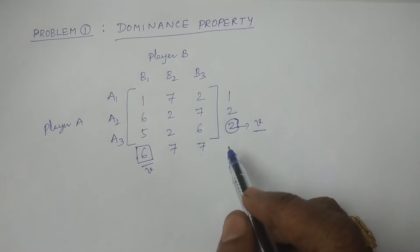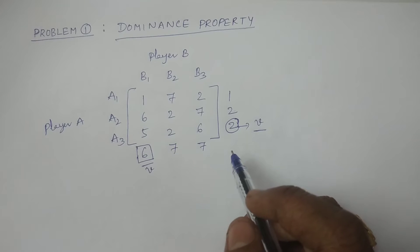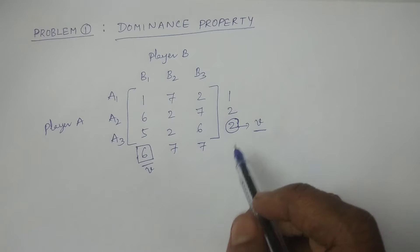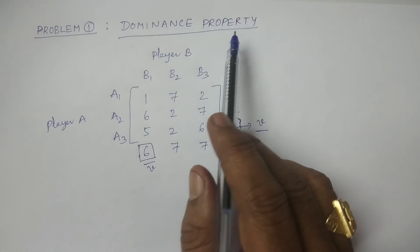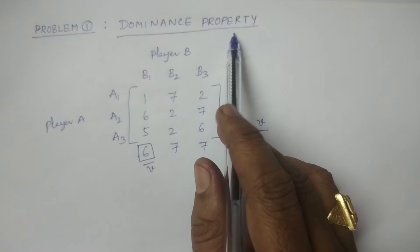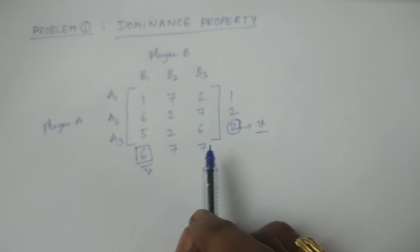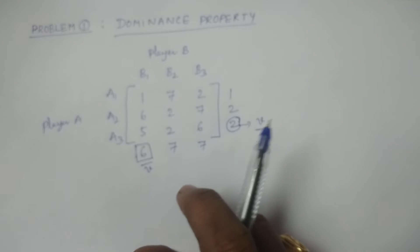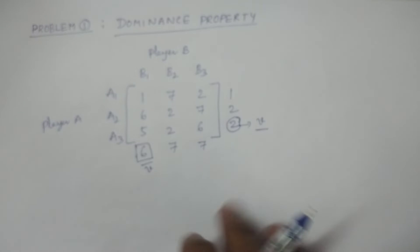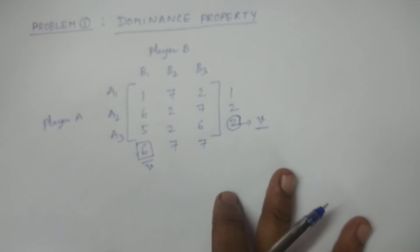Now, since no saddle point exists, the Dominance Principle is applied. There are two rules to be explained.